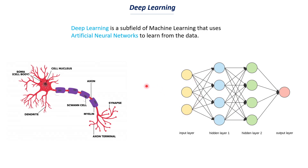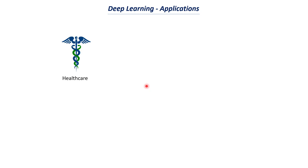In the next video, we will also try to understand how this neural network works and what's really happening behind the scenes. For now, let's move to the topics of applications of deep learning and other things. Healthcare is an important domain where we are seeing a lot of applications of deep learning.